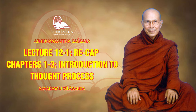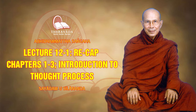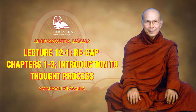Kamavacara sobhana cittas are the sense-sphere beautiful cittas. Under the 54 sense-sphere cittas, we have unwholesome, rootless, and sense-sphere beautiful — three groups. Parallel with sense-sphere cittas is another group called fine material sphere cittas — rupavacara cittas. There are 15 of them: five fine material sphere wholesome, five resultant, and five functional. These arise when you attain jhanas. And another group is 12 immaterial sphere cittas — three groups of four each: wholesome, resultant, and functional.